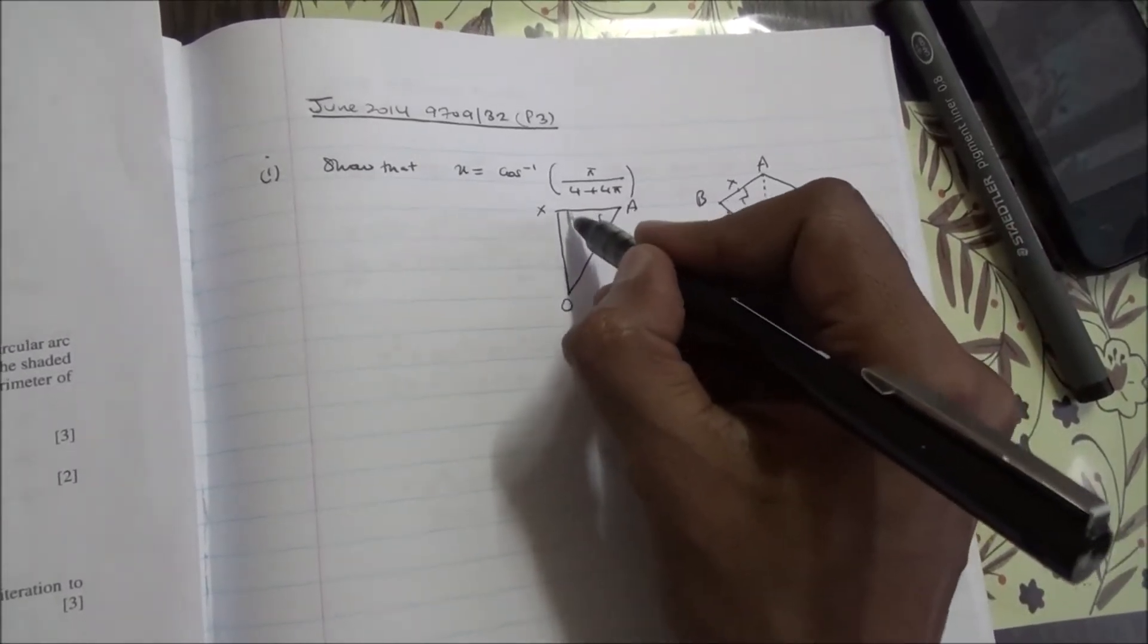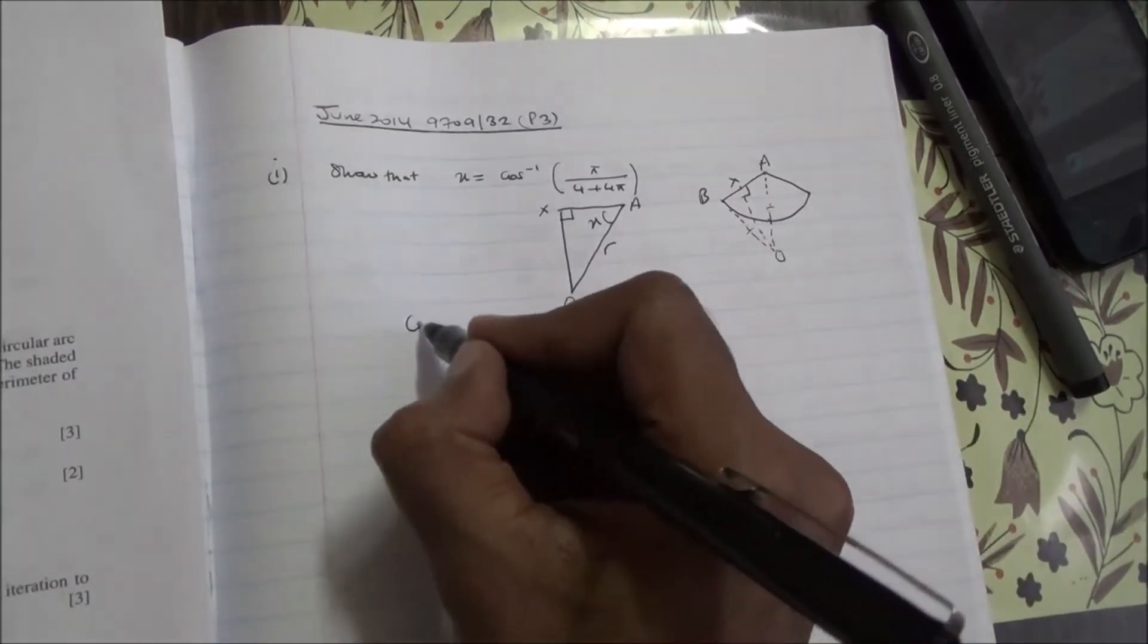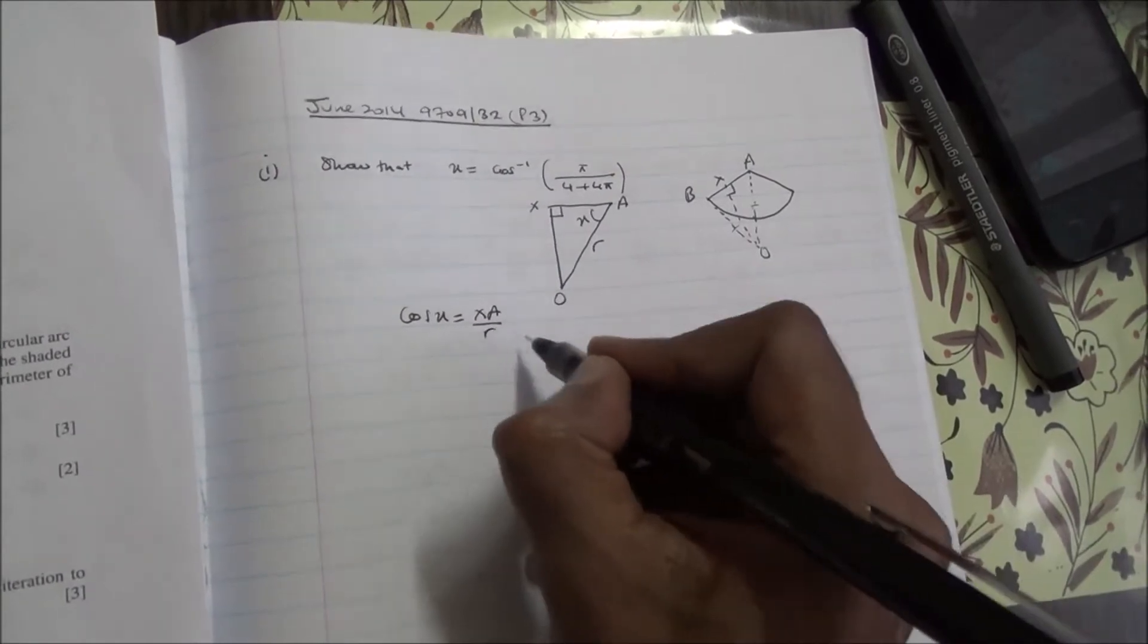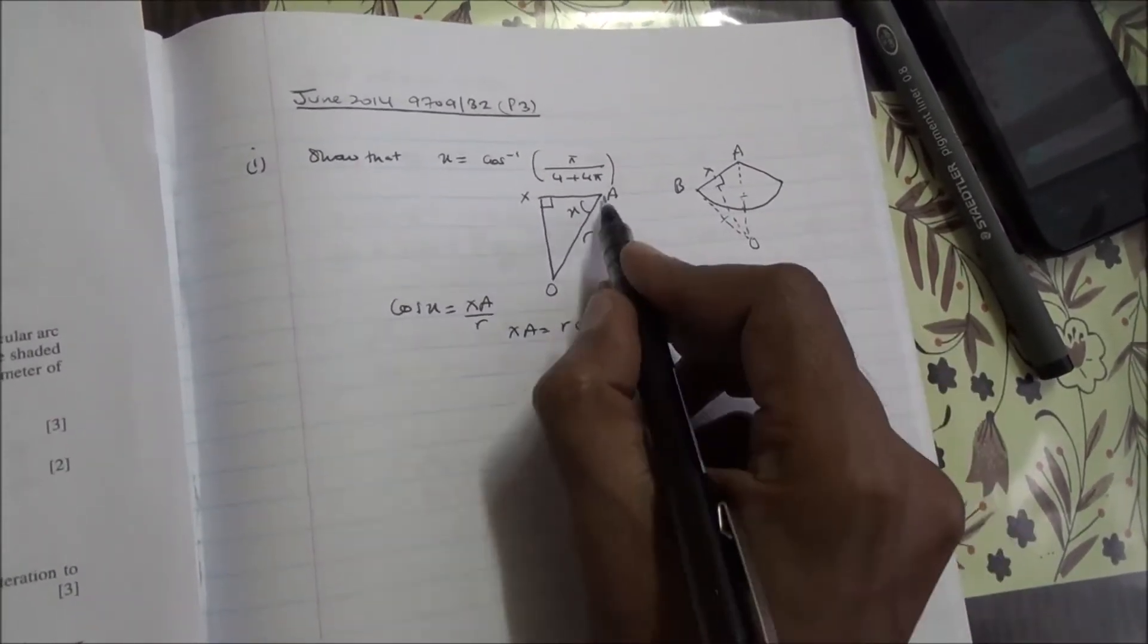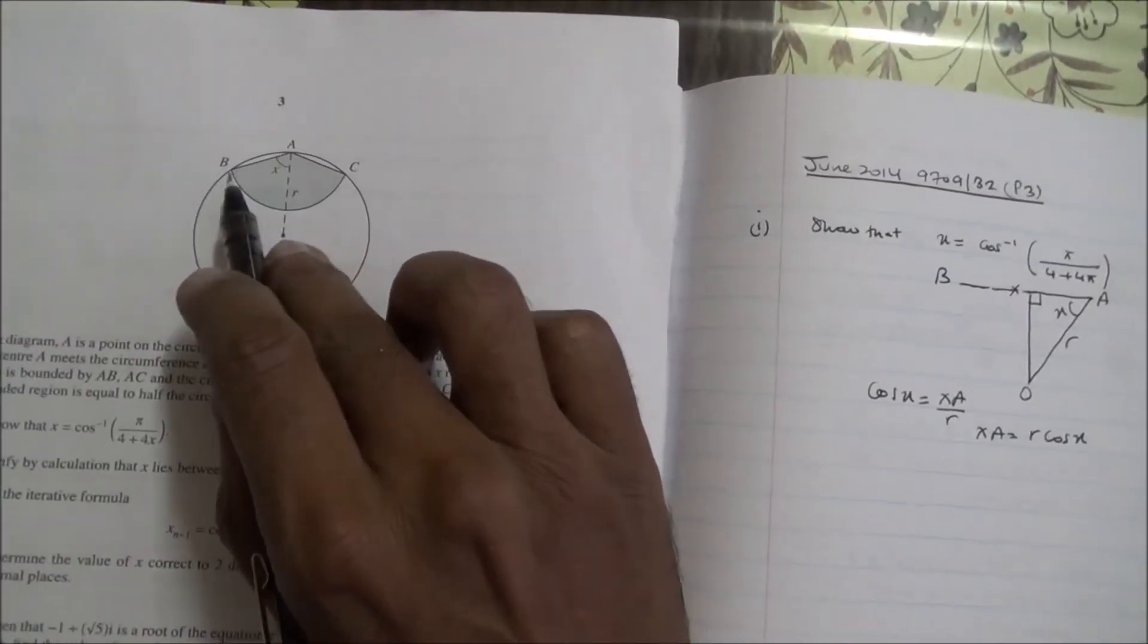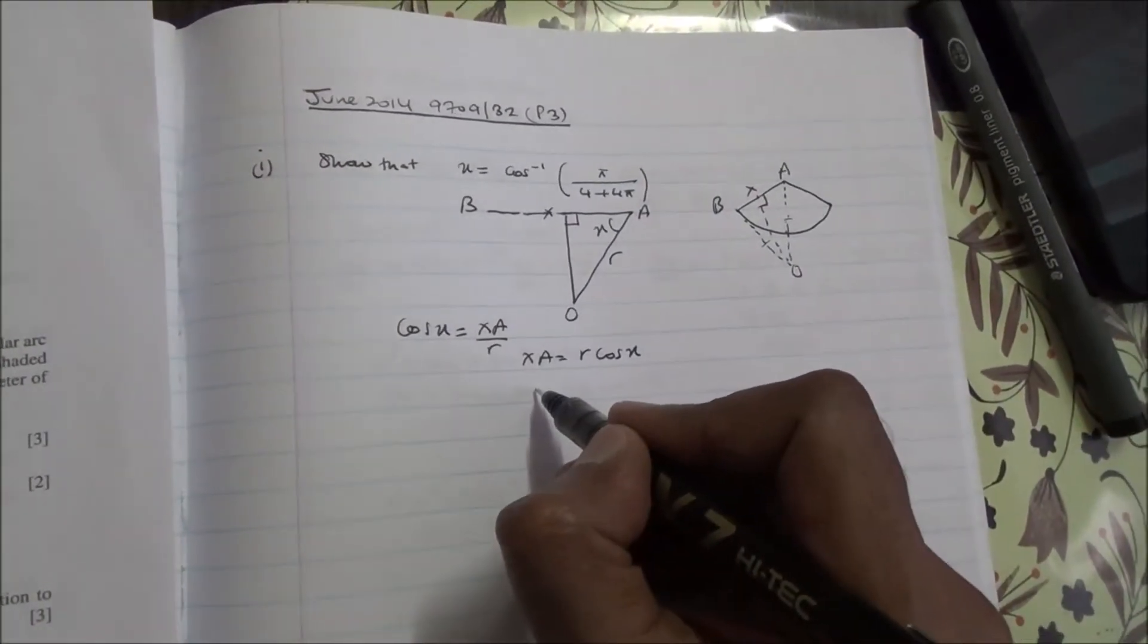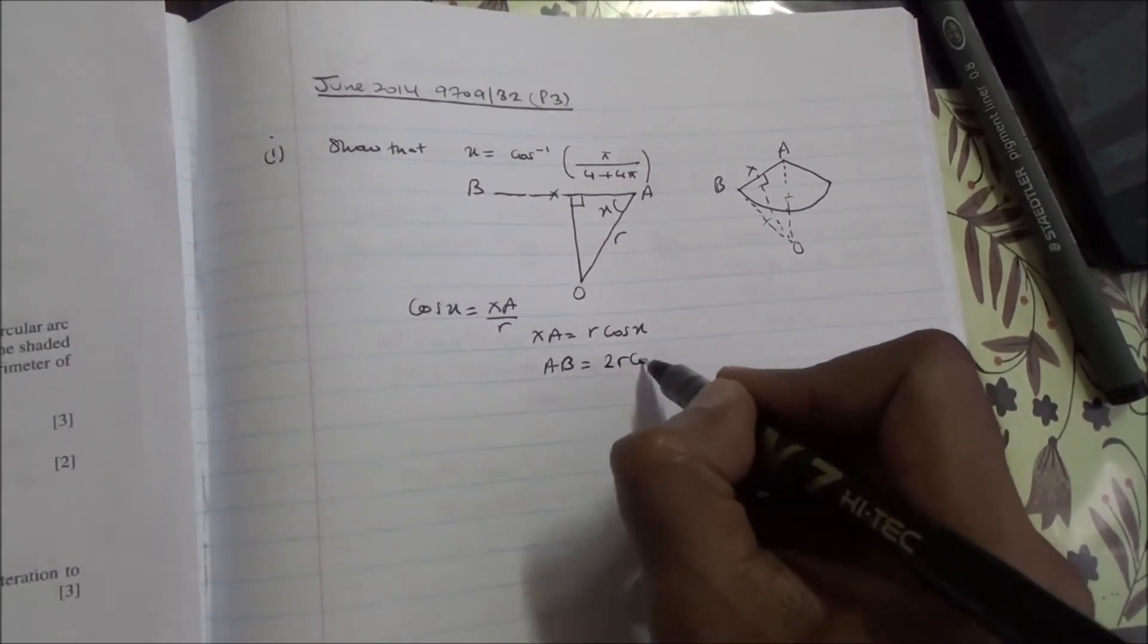You can find XA. This is the adjacent, hypotenuse, so we're going to be using cos. Cos of X is equal to adjacent XA over the hypotenuse R. So XA is equal to R cos of X. If this is XA, it goes all the way to B. And in the question, it goes all the way to B. So this is 2 times XA. So then AB is equal to 2R cos of X.